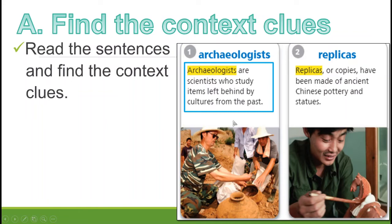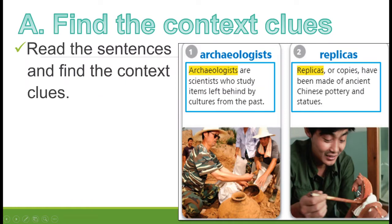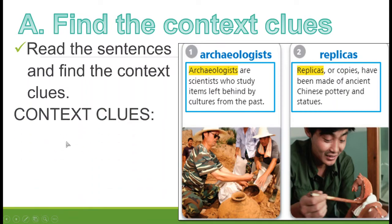You can see words in the sentence that give us hints, tips, or clues about the meaning of 'archaeologists.' You can also learn from the picture below — these are scientists who study cultures from the past. The picture and the words together give us a clue about the meaning. For 'replicas,' the sentence says 'replicas or copies have been made of ancient Chinese pottery and statues' — the picture of a wooden horse confirms it is a copy.